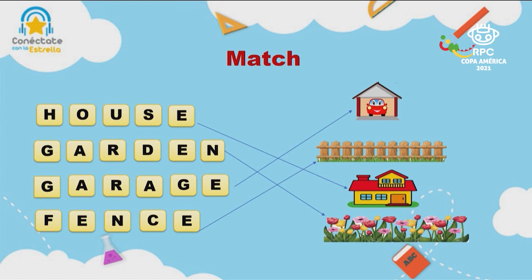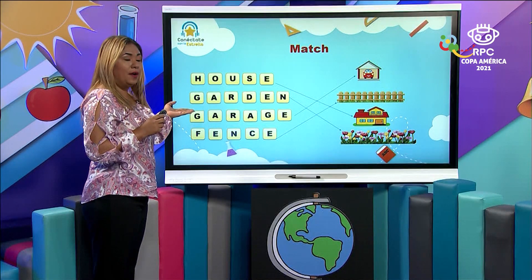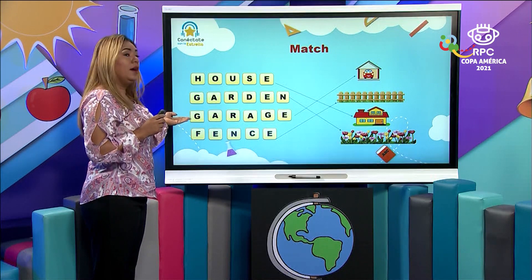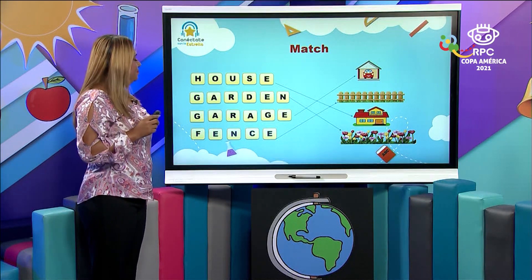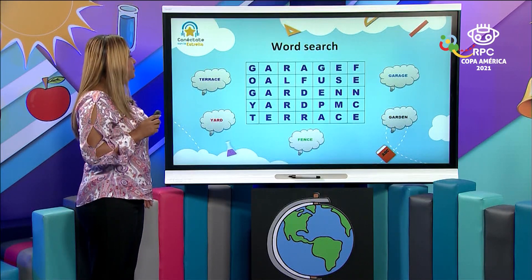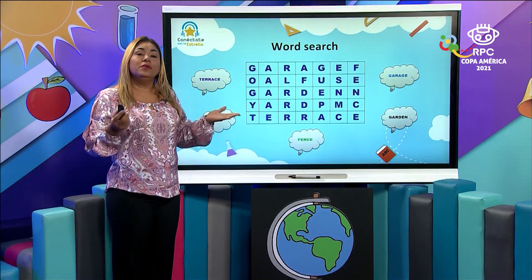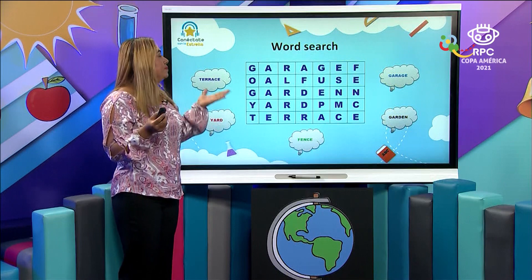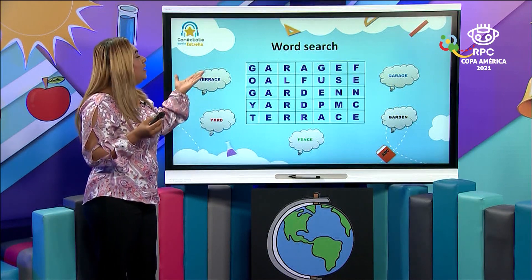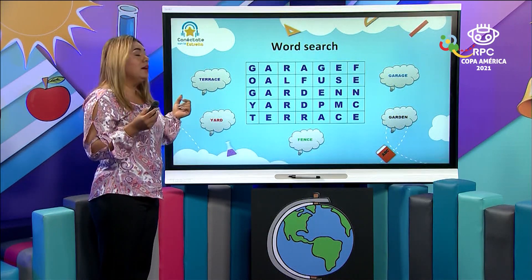F-E-N-C-E, fence. Now let's read together: house, garden, garage, and fence. Now that we know about the external parts of the house and how to write them, let's try to find in the word search the different words we have on the cloud.